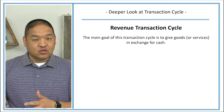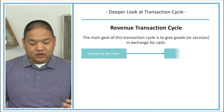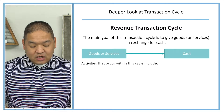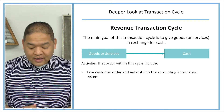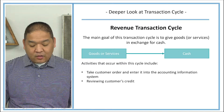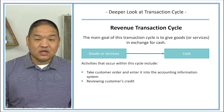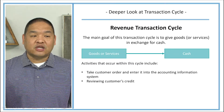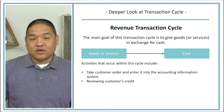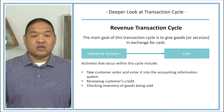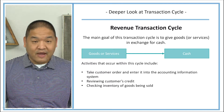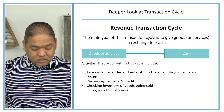The revenue cycle involves goods and services exchanged for cash. Activities within this cycle include taking a customer's order and entering it into an accounting information system, reviewing the customer's credit — whether checking their credit or verifying their established credit limit — and checking inventory to make sure we can actually sell the goods that the customer requested.